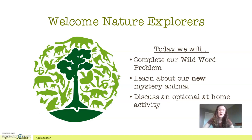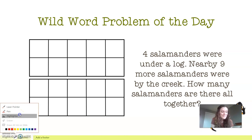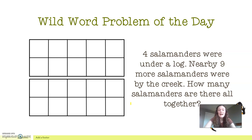Let me get my little pen ready and then we will read the problem together. It says: four salamanders were under a log. Nearby, nine more salamanders were by the creek. How many salamanders are there all together?